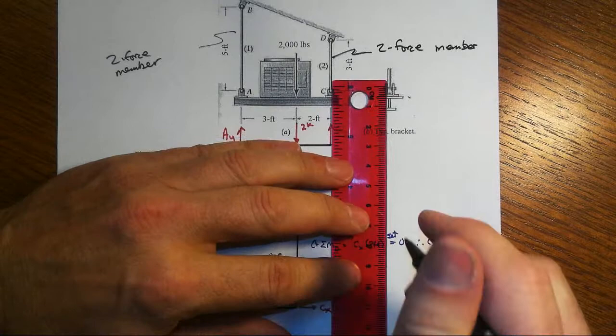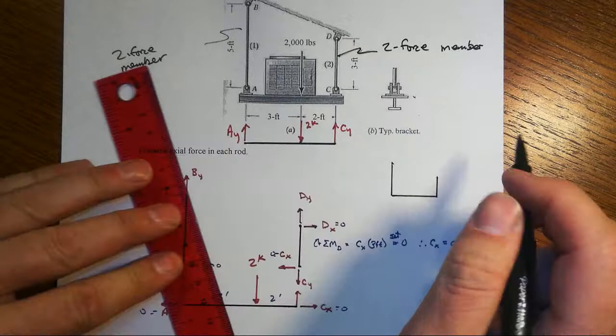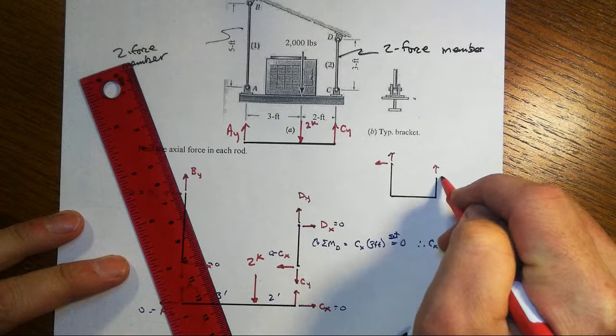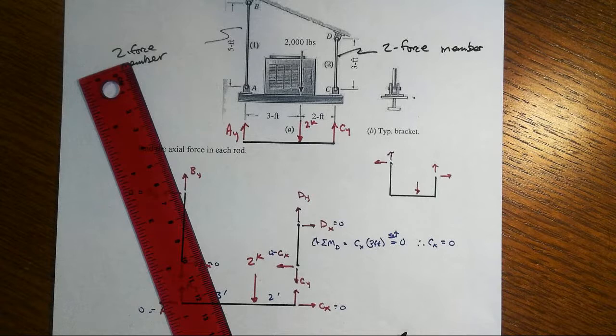You're stuck with all kinds of things, including the global free body diagram that would initially look like following. I pulled those pin supports at B and at D. I've got four unknowns. I've got three equations of equilibrium. Uh-oh, Houston, we've got a problem.